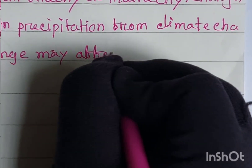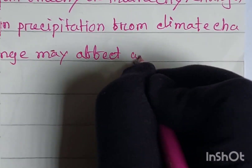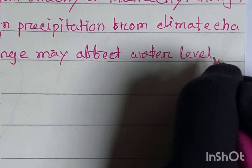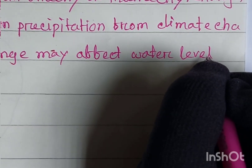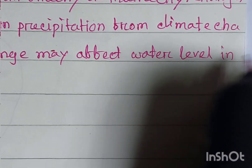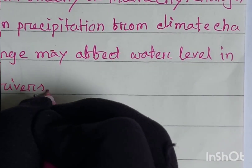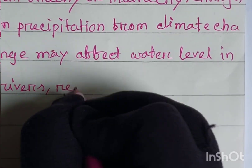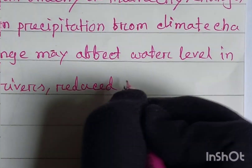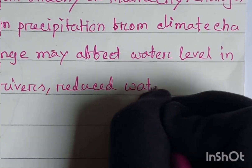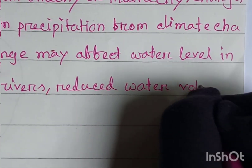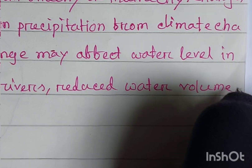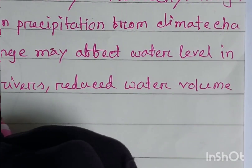Changes in precipitation from climate change may affect water levels in rivers — reduced water volume, which can result in increased pollutant concentrations.